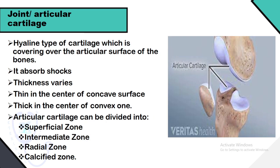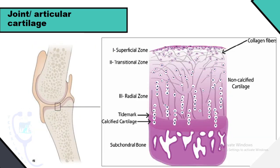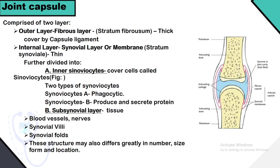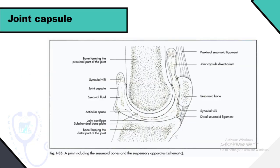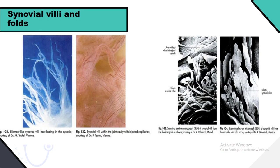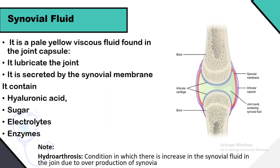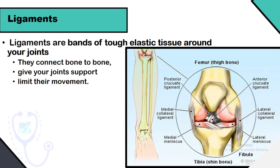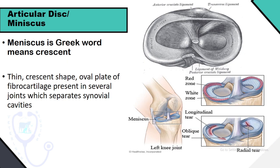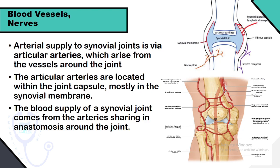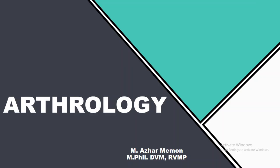In the skeletal system, I discussed the bones included in the axial skeleton and appendicular skeleton. Today's topic is Arthrology. I am going to tell you about joints in the animal body, and what are the basic structures and components of a joint. Let's start.